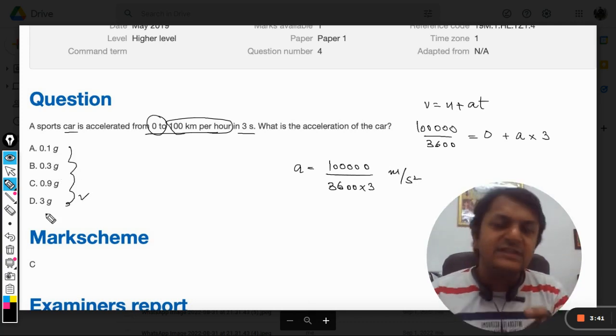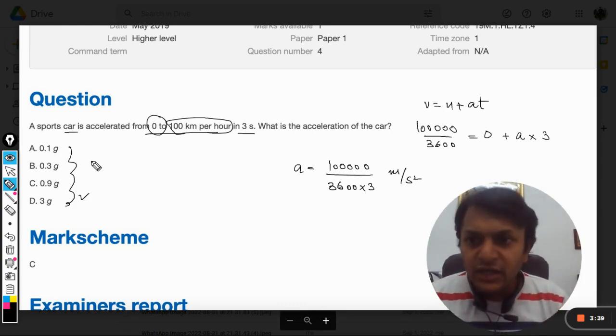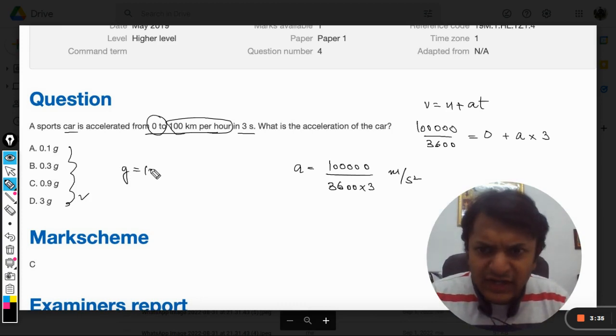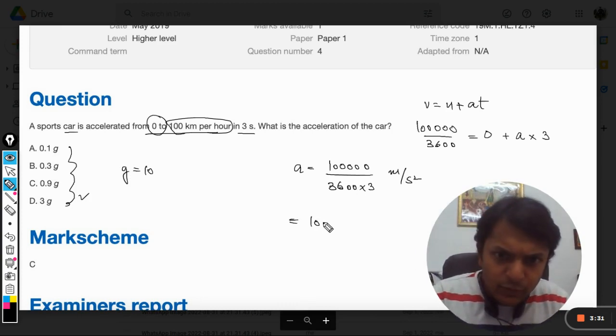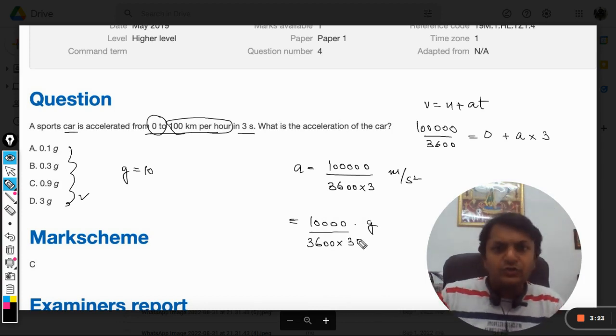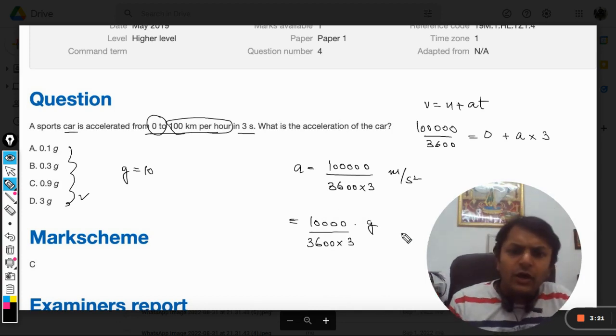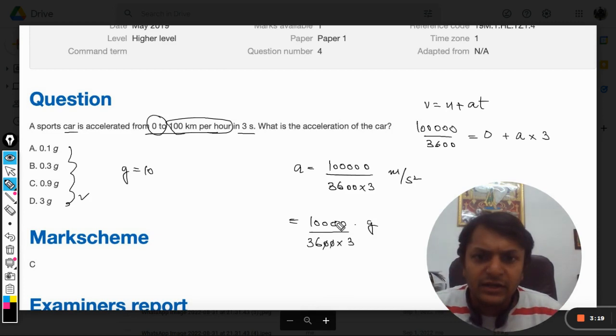Now this is not grams, by the way. This is acceleration due to gravity, because grams does not make any sense. Acceleration due to gravity we can take as 10, so we will divide it by 10. So it will become 100g divided by 3600 times 3.